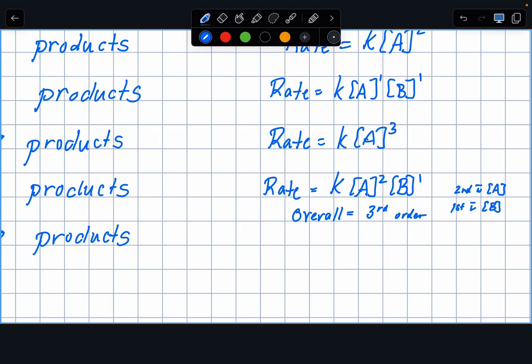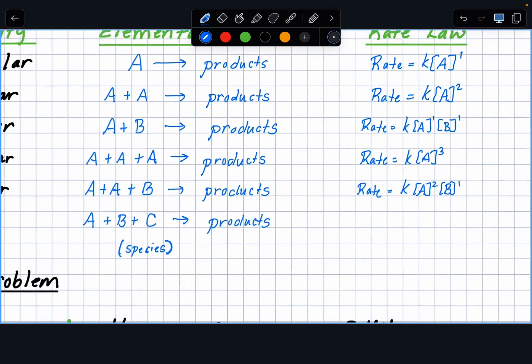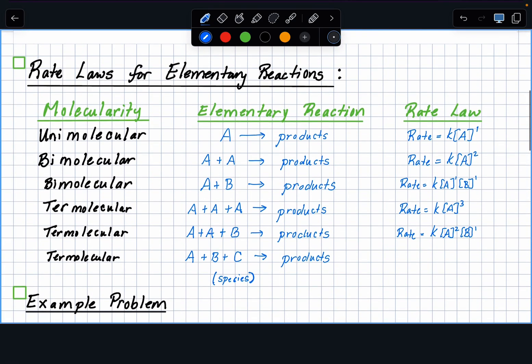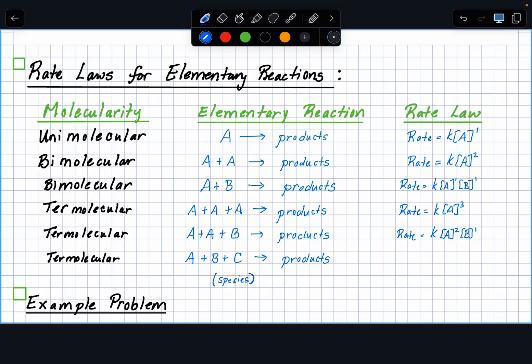So again, I'm going to zoom in and just say, okay, well, overall, this would be third order. But you would say something like it's second order with respect to A and it's first order with respect to B. So I had to kind of write that kind of small, but I'm going to end up erasing it anyway. So again, that second order with respect to A, first order with respect to B. And normally in the past, we would have to run a couple experiments and compare the trials or graph the concentration versus time, the natural log versus time, or the inverse versus time of the concentration.